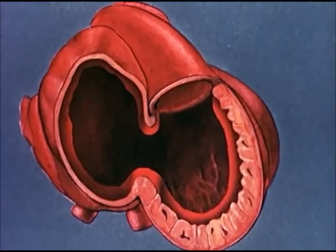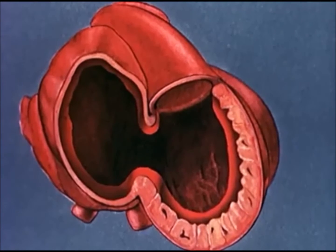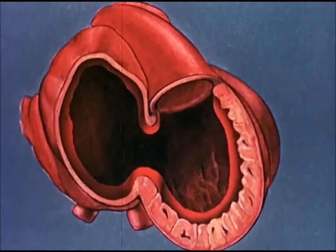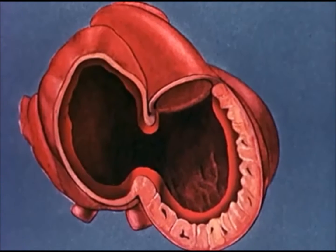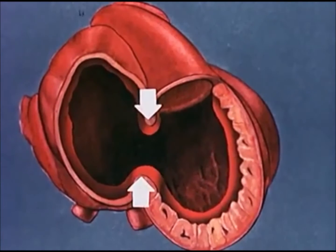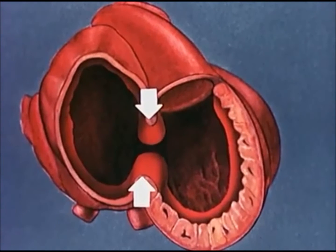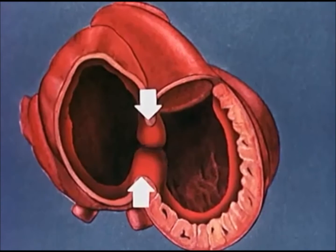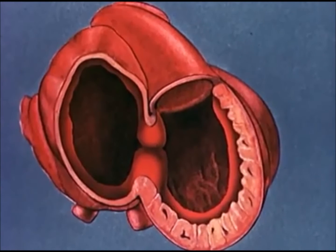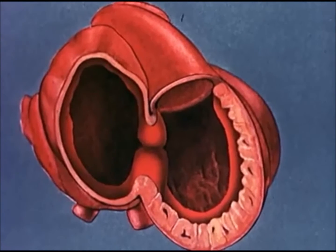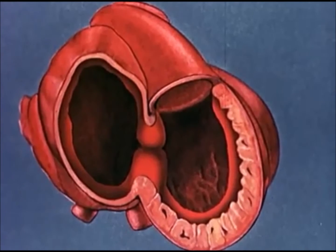Endocardial cushions extend from opposite sides of the atrioventricular aperture, advancing toward the auriculoventricular junction, and ultimately fuse into a column dividing the channel between the atrium and ventricle.